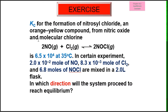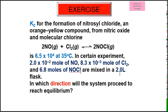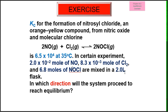Given Kc is 6.5 × 10⁴. The moles of NO, Cl₂, and NOCl are given, and the volume is 2 L. In which direction will the system proceed to reach equilibrium? We need to use the number of moles given, divide by the volume to find the concentration of each species, then substitute into the Qc expression and compare the Qc value with the Kc value.